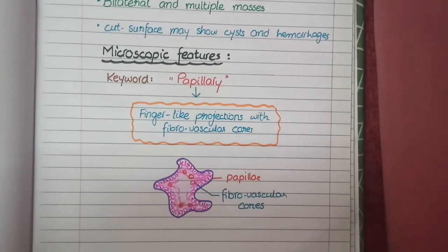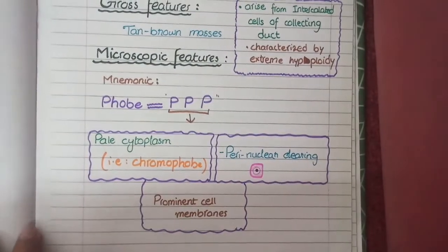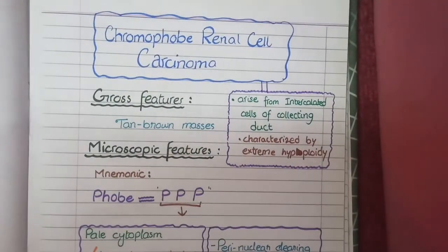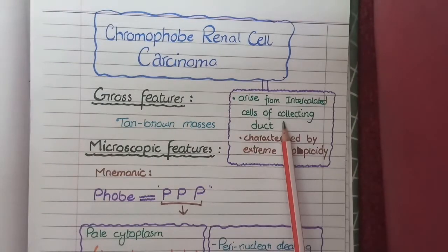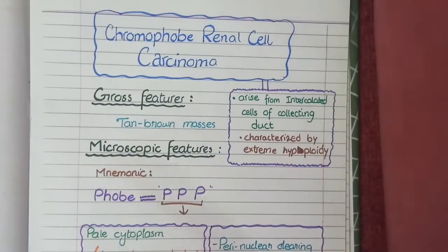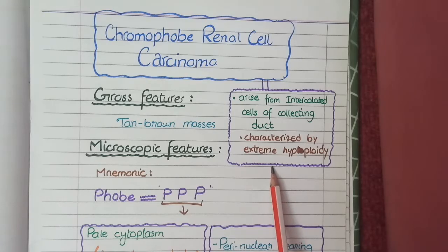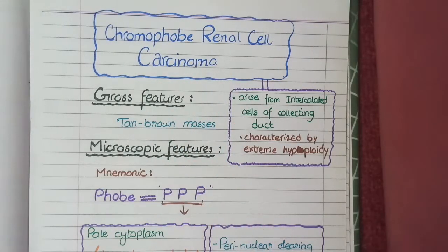Chromophobe renal cell carcinomas arise from intercalated cells of the collecting ducts. The unique feature is that they are caused not by mutations in one or a few genes, but rather by multiple losses of entire chromosomes. This deficiency of multiple chromosomes is known as extreme hypoploidy, which is a hallmark feature of chromophobe renal carcinomas.